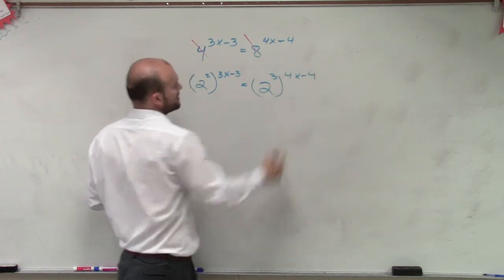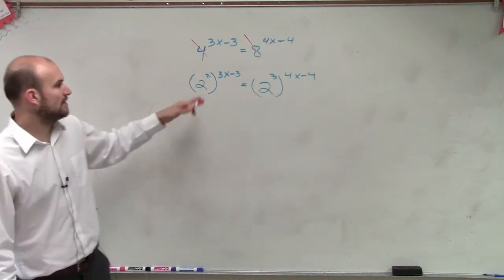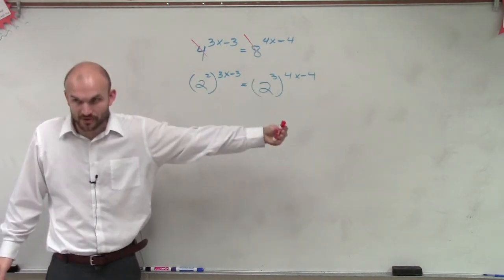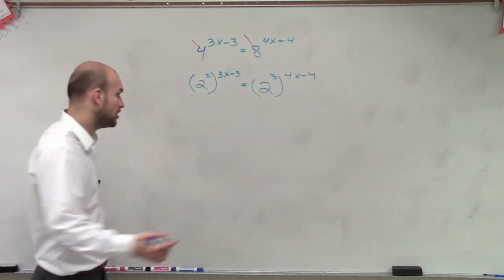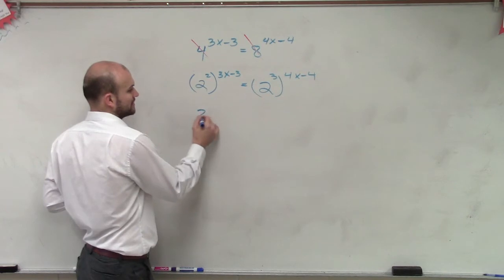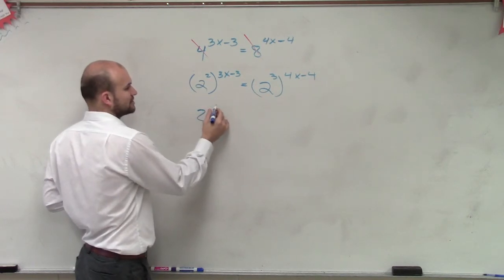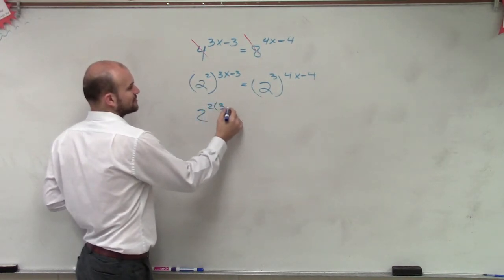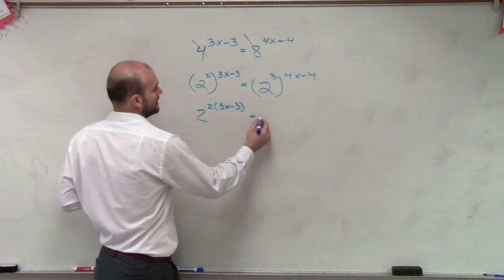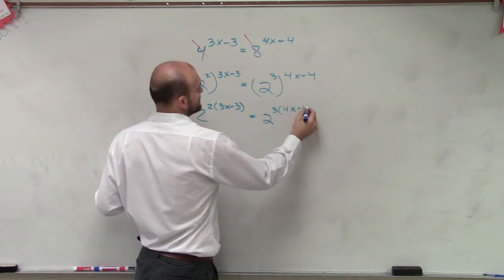Now, before we finish the problem, we know that when we take an exponent and raise it to another exponent, we have to multiply and distribute with that. So therefore, it's really 2 to the 2 times 3x minus 3 equals 2 to the 3 times 4x minus 4.